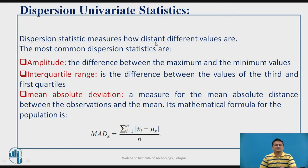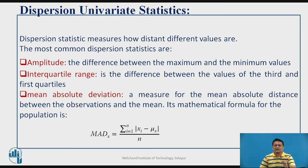Dispersion statistic measures basically talk about how distinct and how different the values are present in the given sample space for different attributes. The most commonly used dispersion statistic parameters start with amplitude. Amplitude is the difference between the maximum value of an attribute and its minimum value. For example, if maximum height is 195 cm and minimum height is 150 cm, then 195 minus 150 equals 45, so 45 is the amplitude for the attribute height.